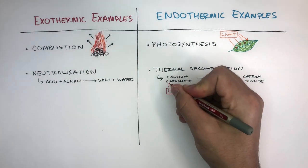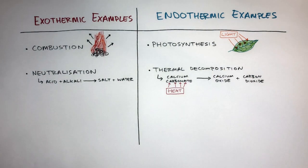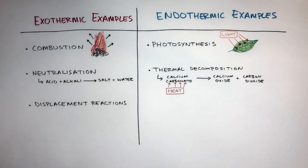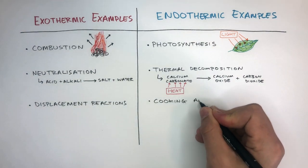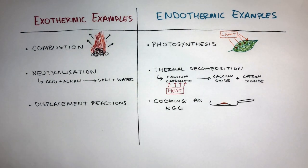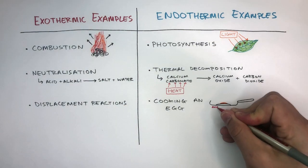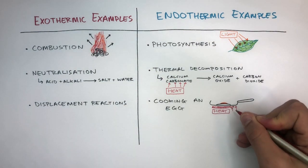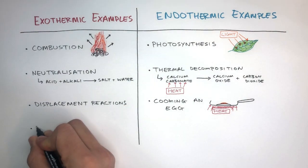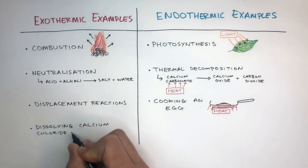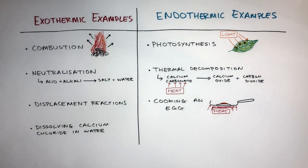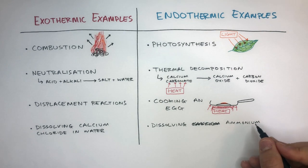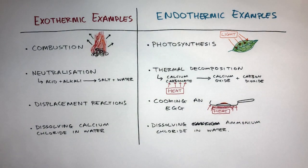Heat energy is absorbed from the surroundings, causing the temperature of the surroundings to decrease. Without any heat energy, this reaction will not take place. Displacement reactions are exothermic. Cooking an egg is an example of an endothermic reaction because heat is being taken in from the surroundings. Dissolving calcium chloride in water is an exothermic process, and dissolving ammonium chloride in water is an endothermic process.